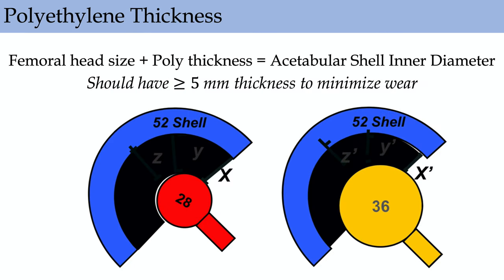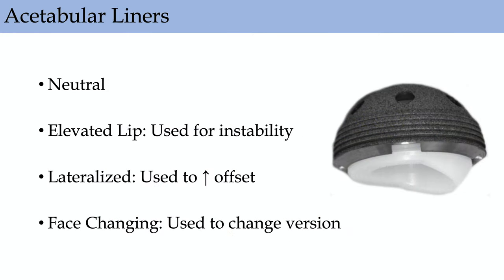Polyethylene thickness: traditionally you want at least five millimeters. The femoral head size plus poly thickness gives you the acetabular shell inner diameter. You want uniform thickness of about five millimeters to prevent early poly wear. Different acetabular liners: neutral or elevated lip liners — elevated lip liners give about 20 degrees extra before dislocation. Lateralized liners increase offset; face-changing liners change version.